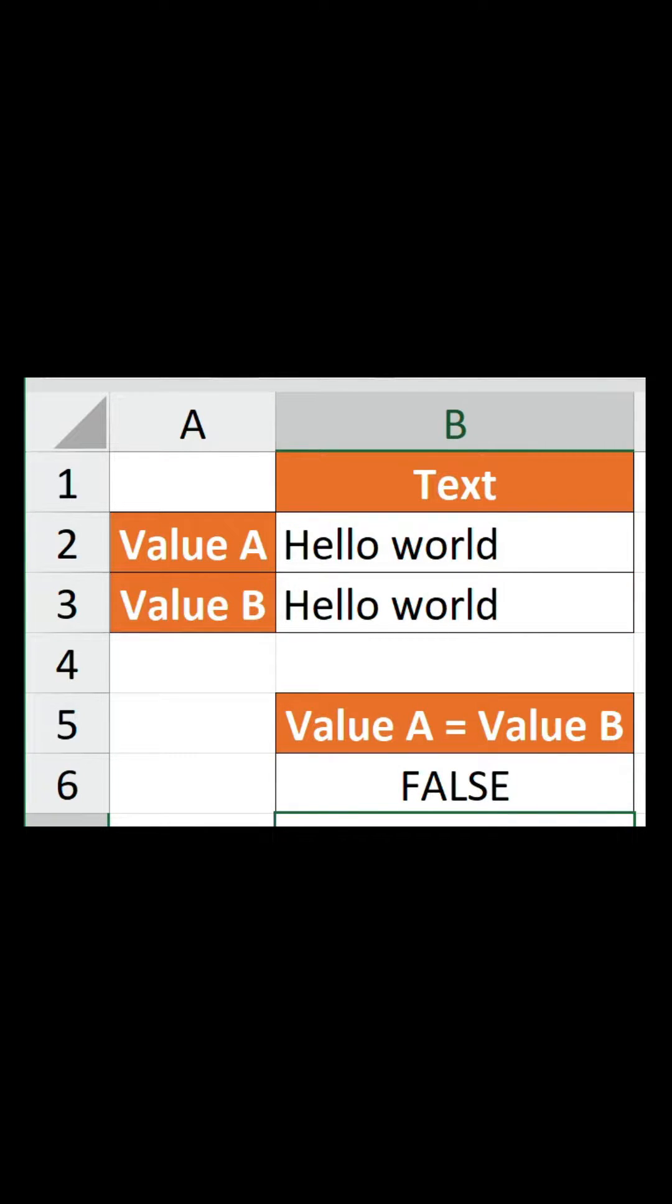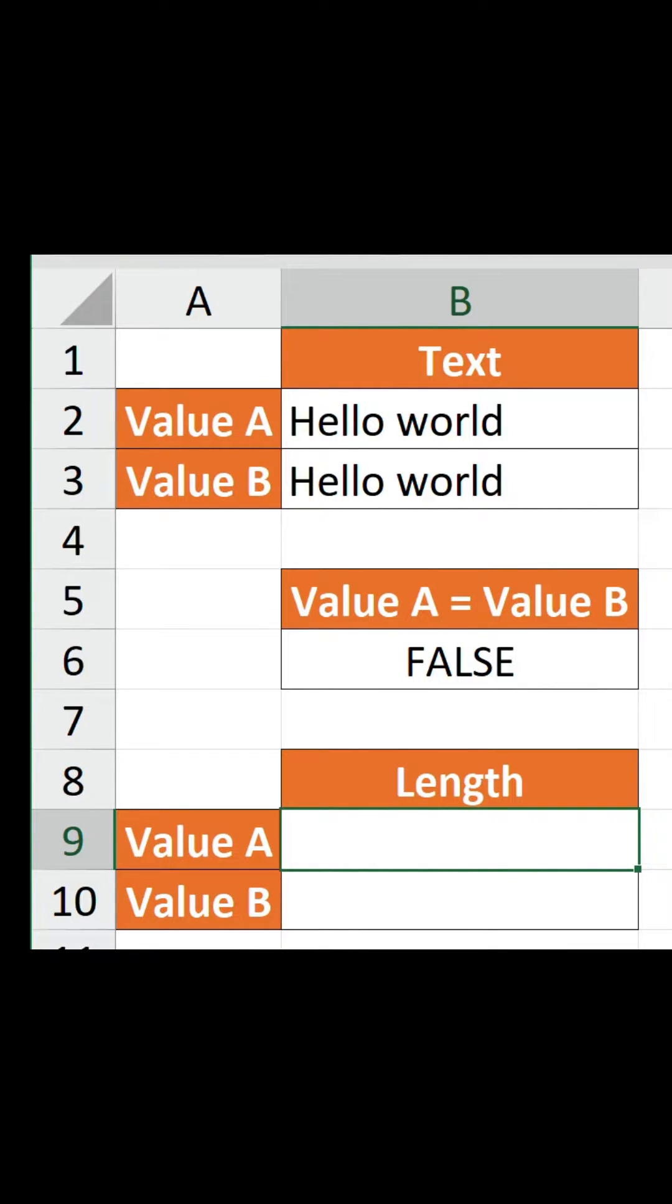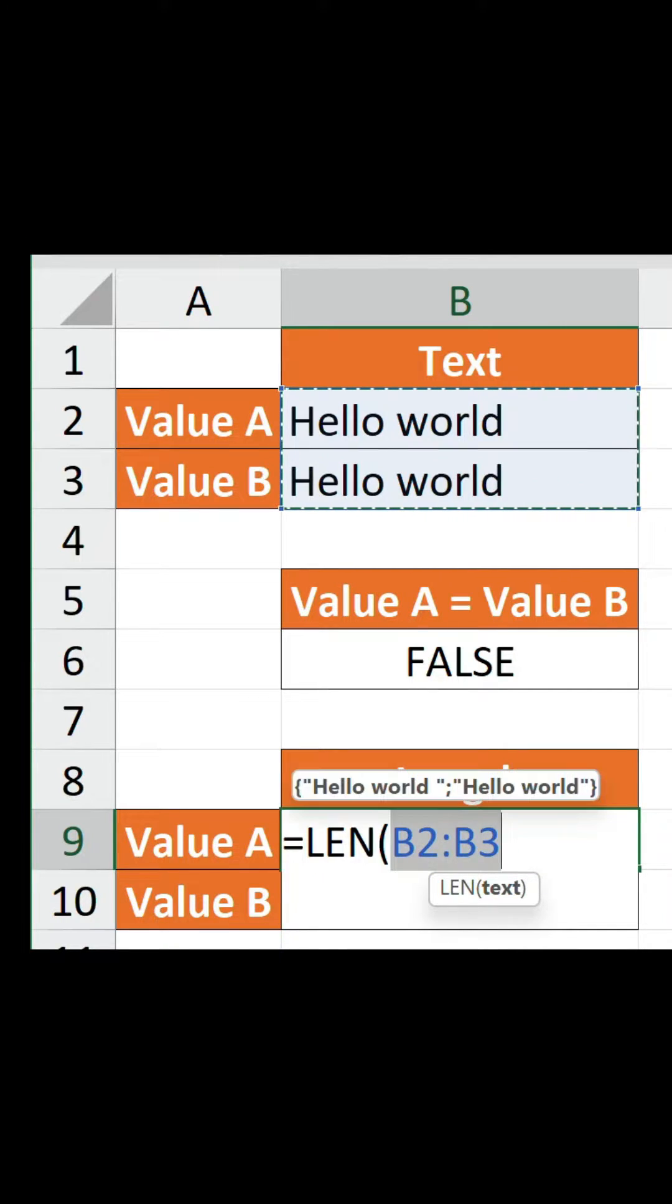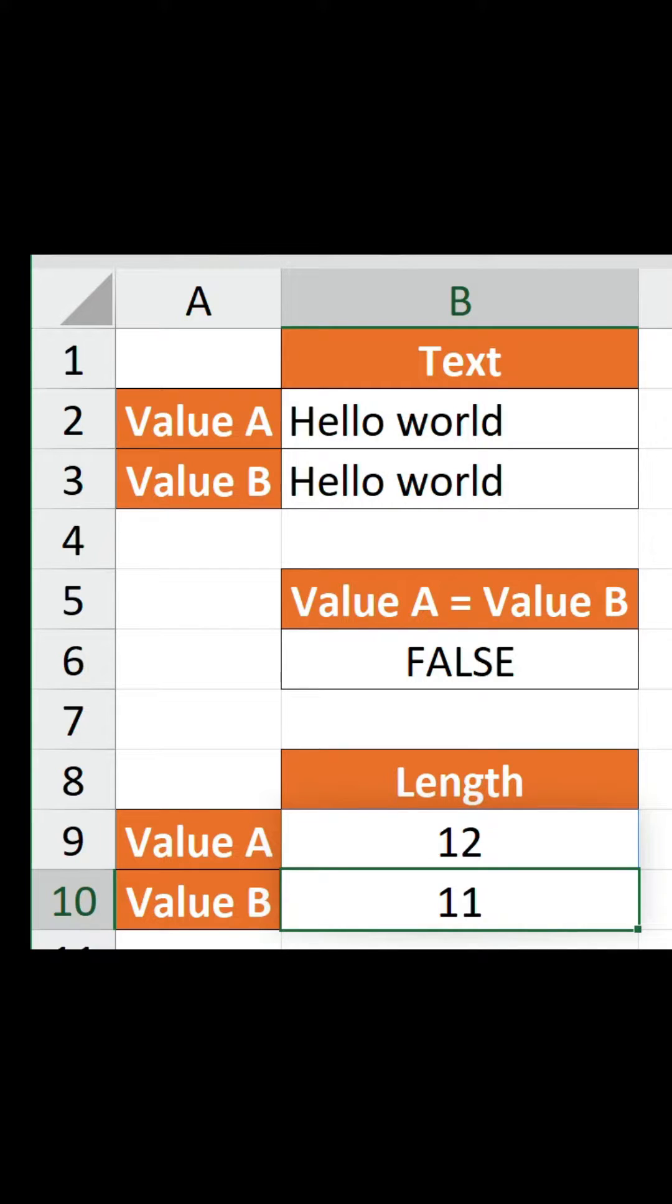You're probably thinking it's probably a trailing space. Let's do another check, shall we? Let's return the length of these values using len. There is an extra character and it looks like it's at the end of value A. So let's remove that and confirm the formula and the values should be the same length. And they are.